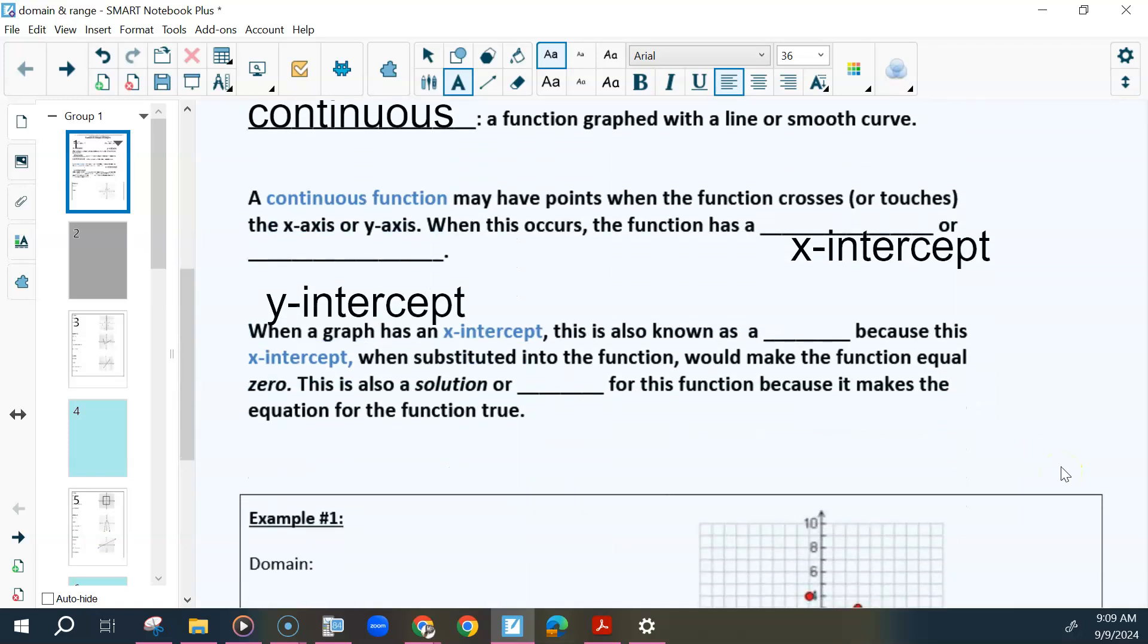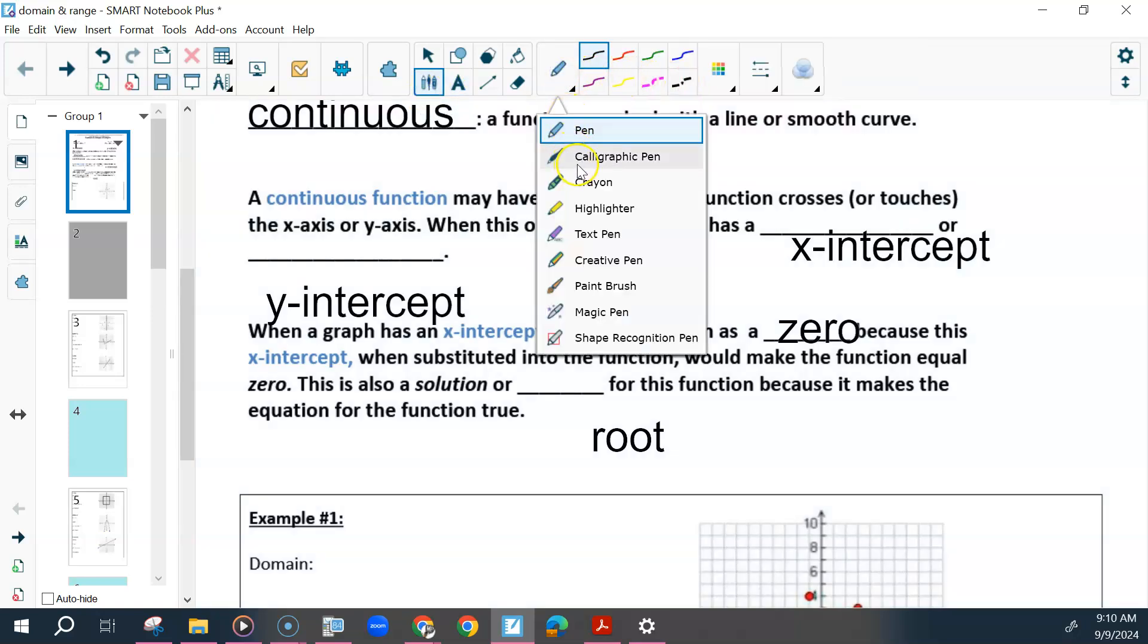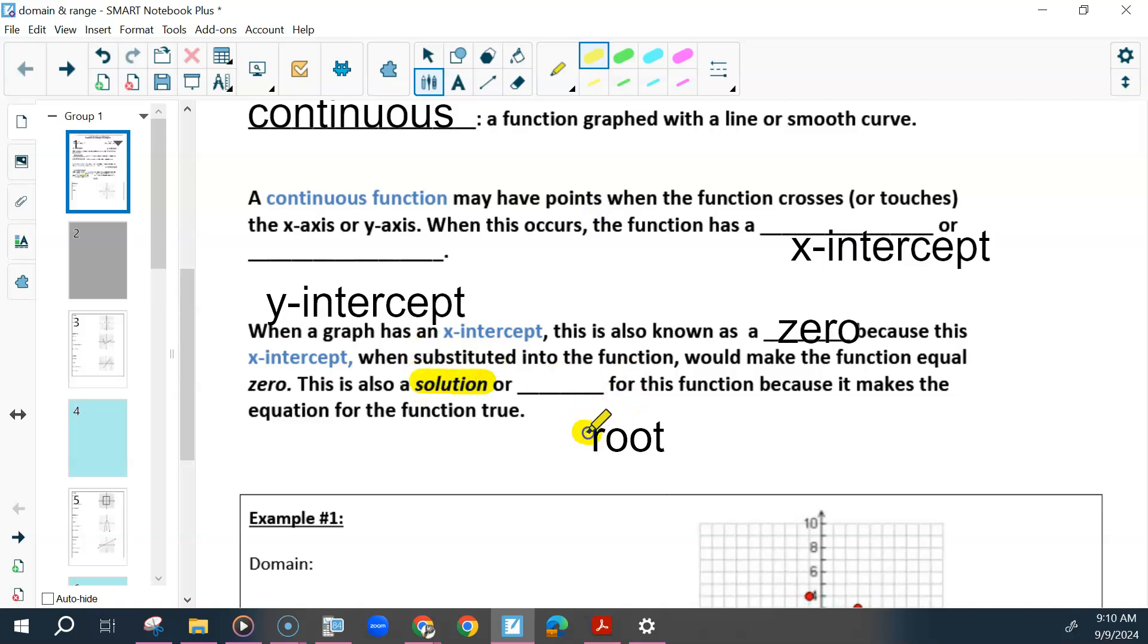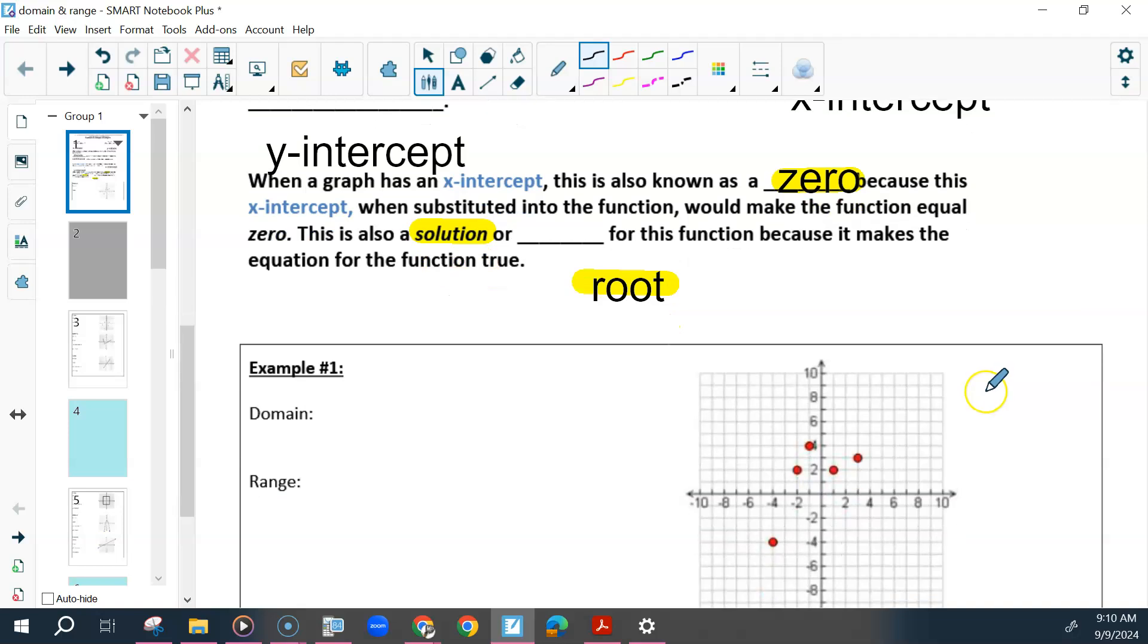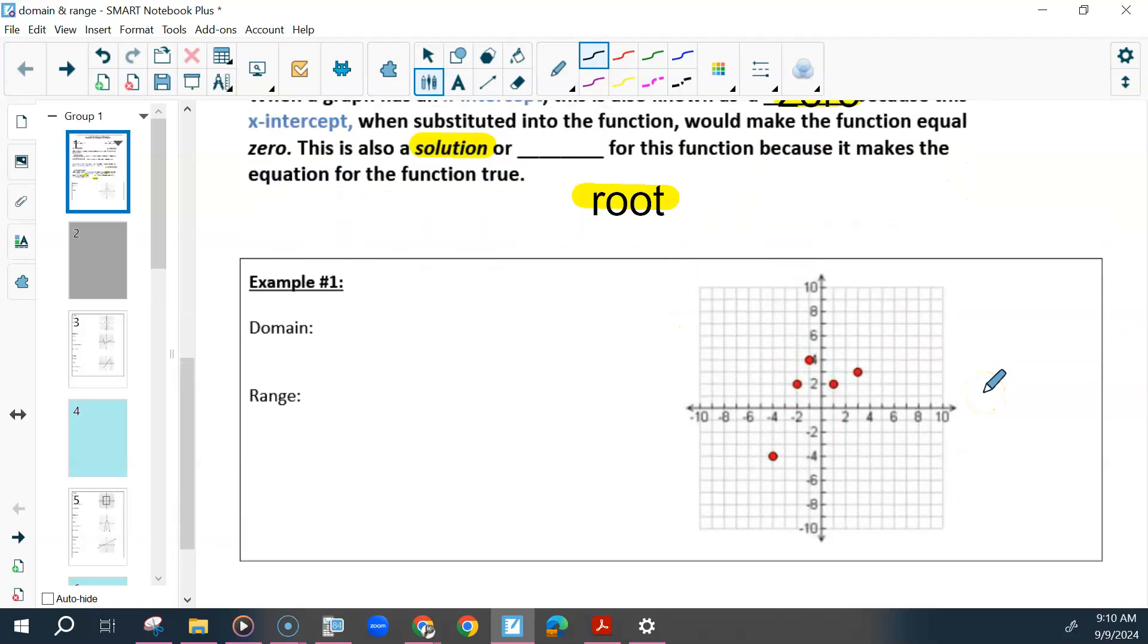Some other vocab. X intercept has different names, also known as a zero, or a solution, or a root. I meant to mention this. At the top, your learning target. This is the last thing we have to talk about in that learning target. Because we talked about slope and intercepts, zeros. We talked about all that stuff. So we just need domain and range left.